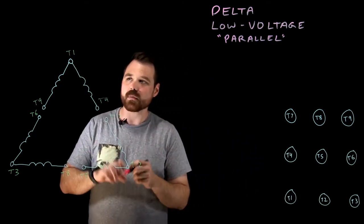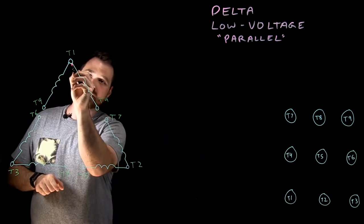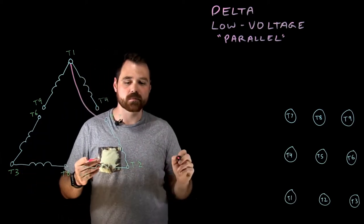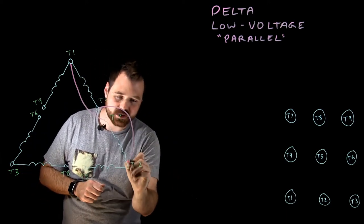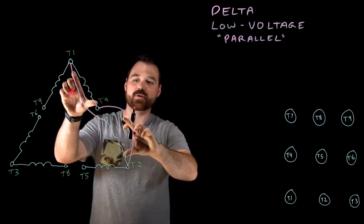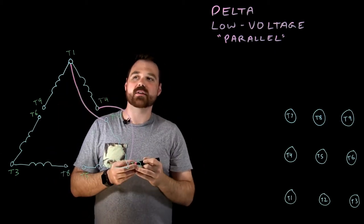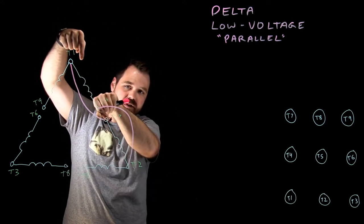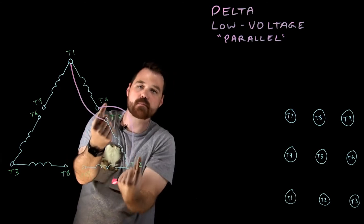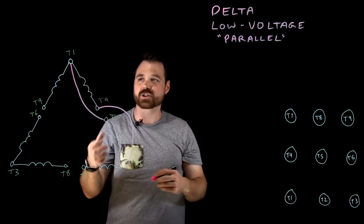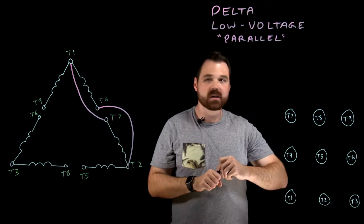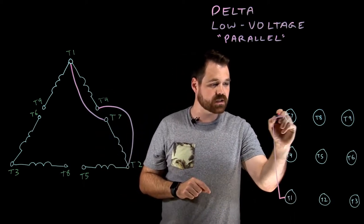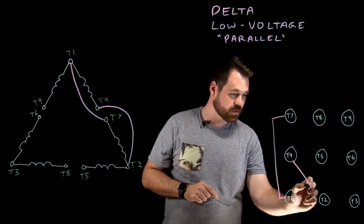We always want, in this case, T1 to be connected to T7, and T4 would be connected to T2. That would put those in parallel with each other so that if current was flowing into T1, it's now also flowing into T7 and flowing through that way and then back out. So that's our first step: T1 to T7 and T4 to T2.